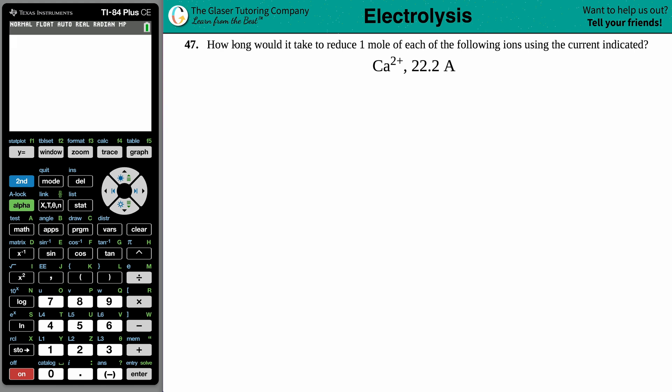Number 47, how long would it take to reduce one mole of each of the following ions using the current indicated? And in this case, we have calcium two plus ion, and then we have a current of 22.2 amps.